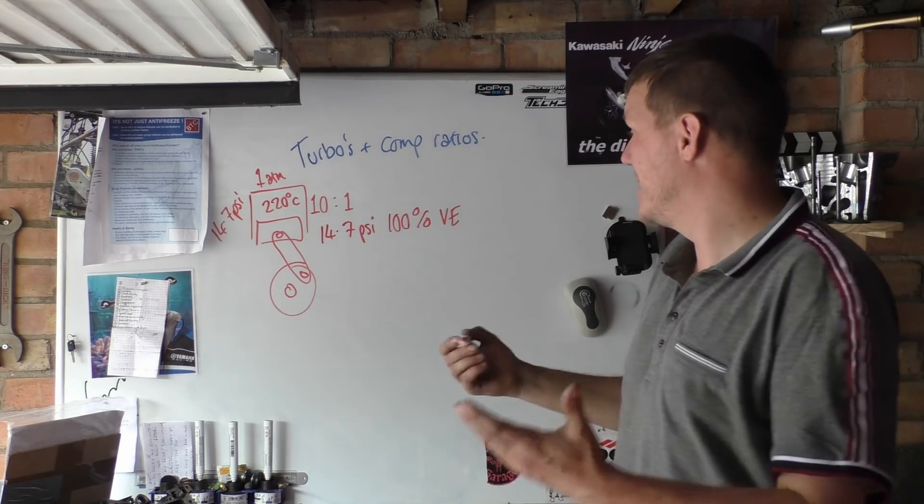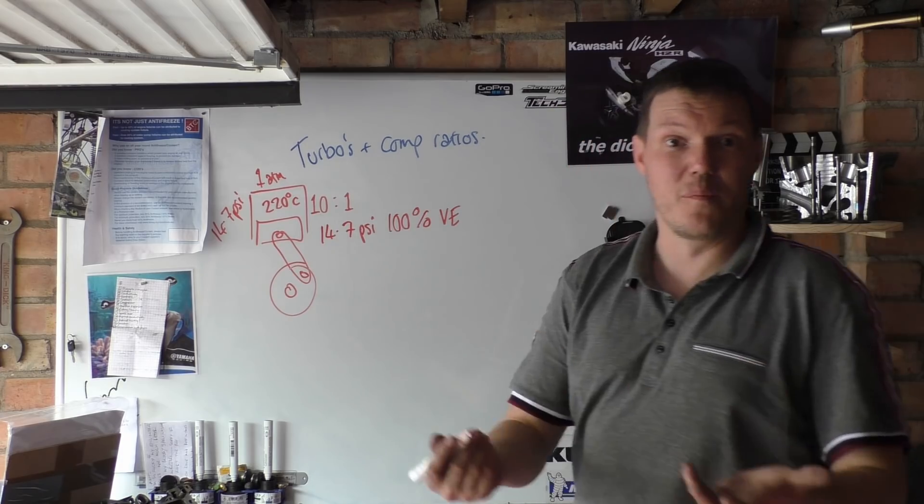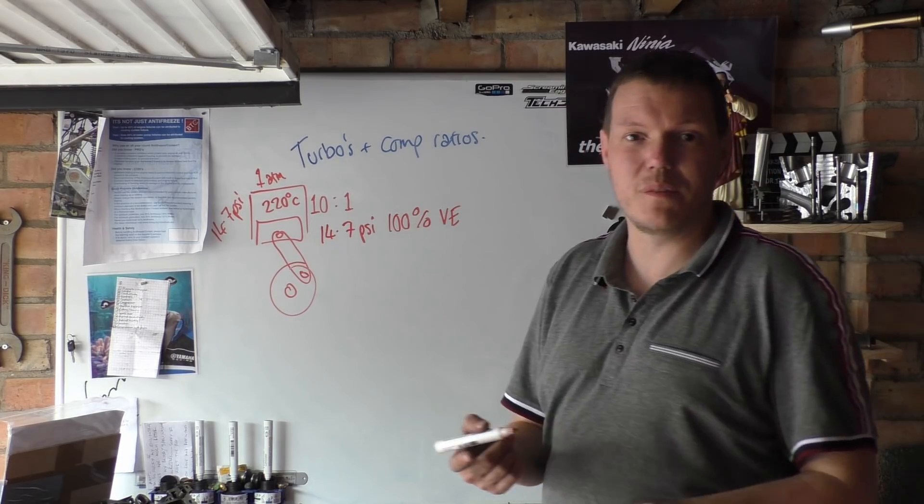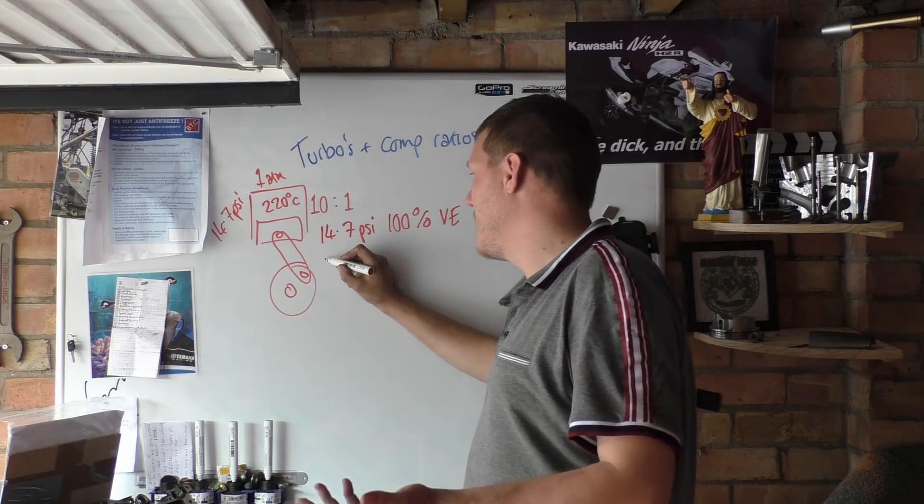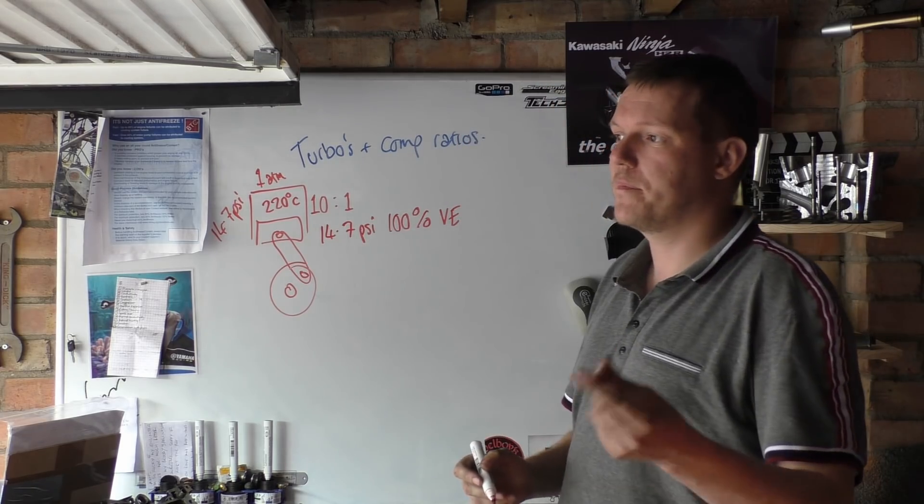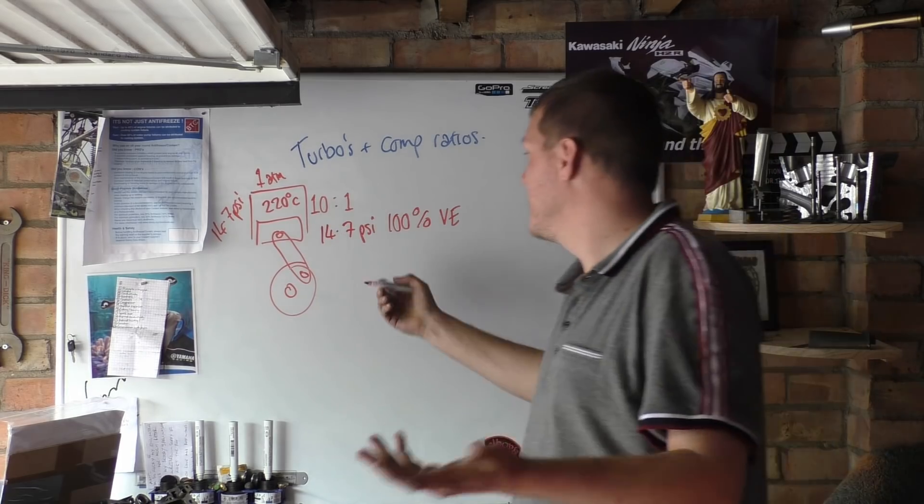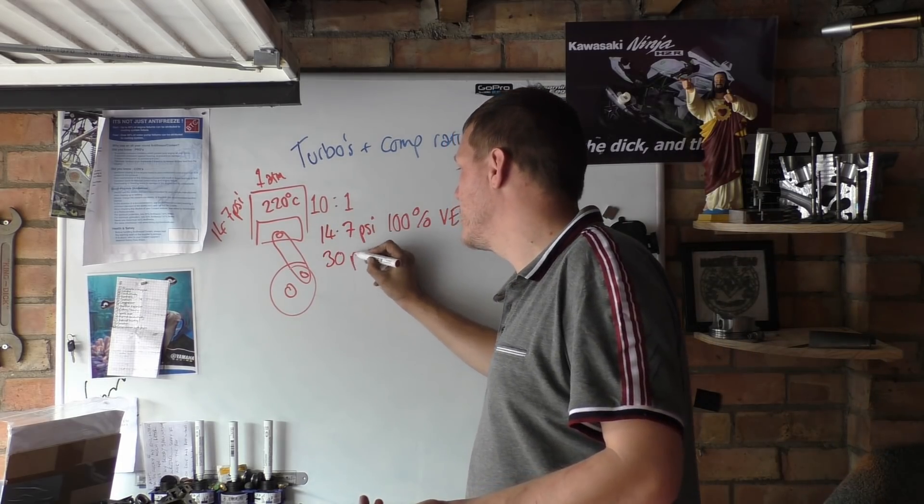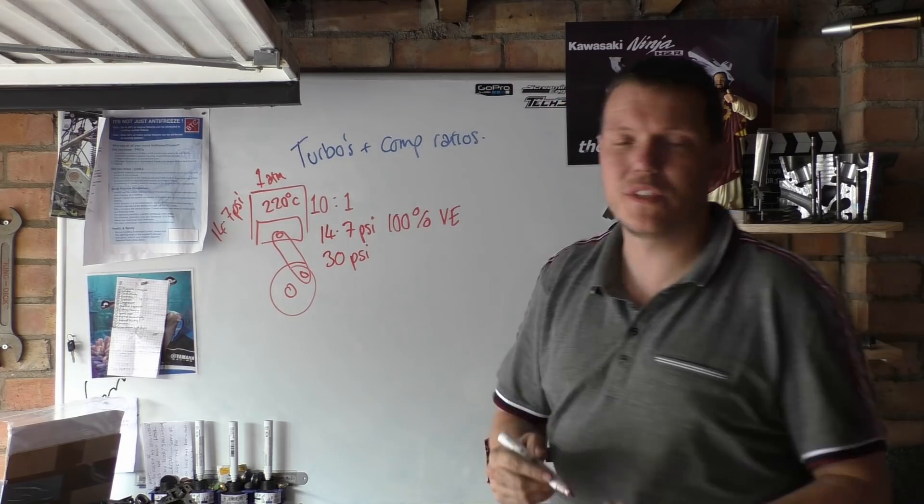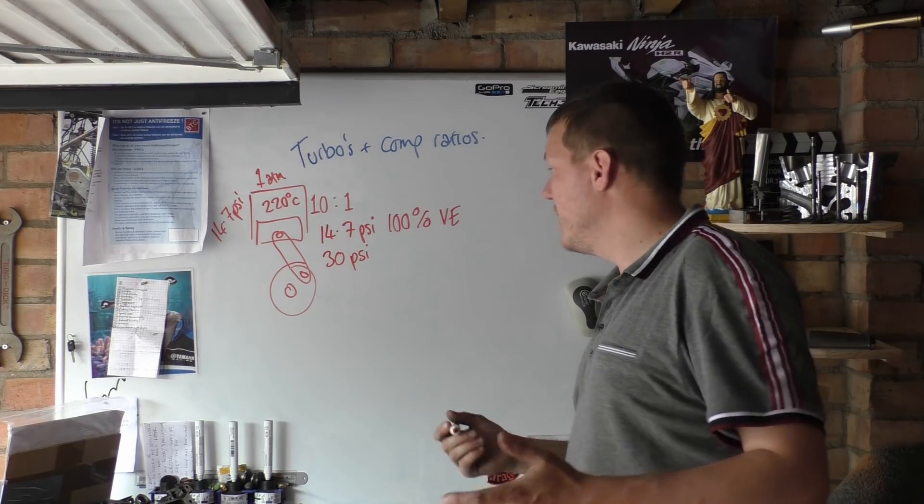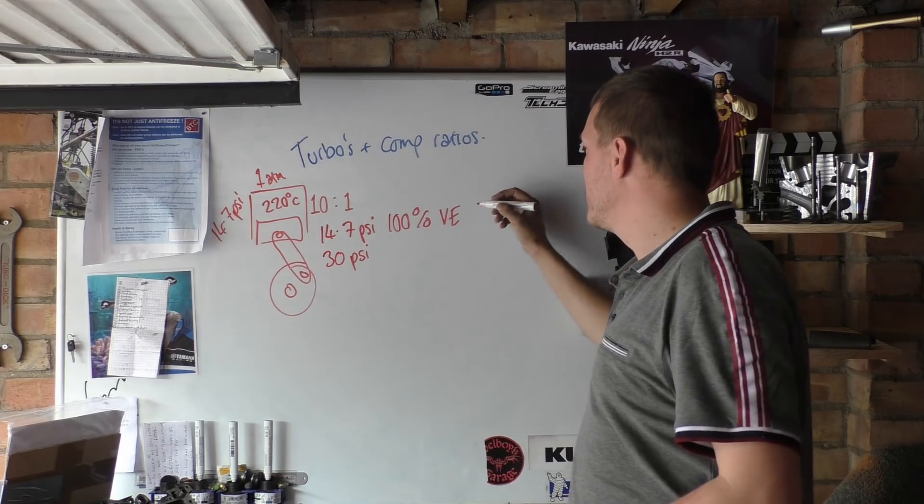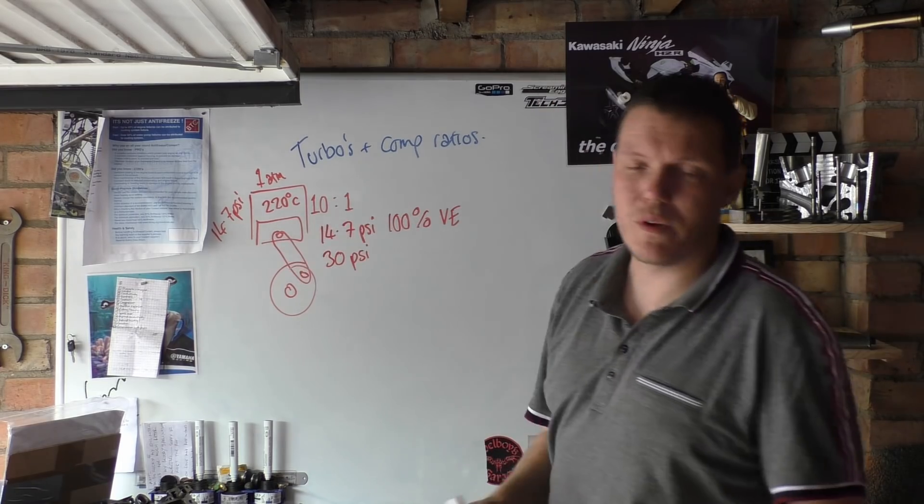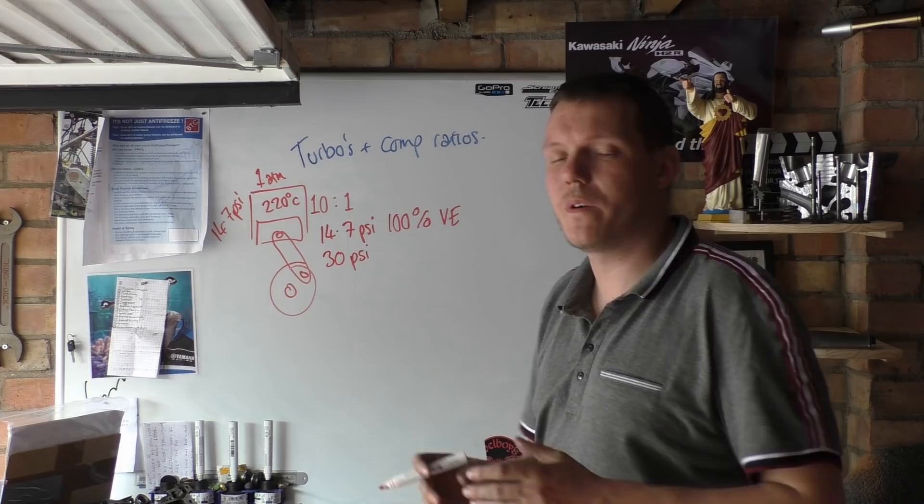So if you put a turbo on this and the turbo sticks in another bar's worth - let's say we boost this up by 15 psi. We'll just round this up and say it's 15 and 15. If we're doing that, when we compress that gas we're going to reach 220 degrees C before we're at top dead center.